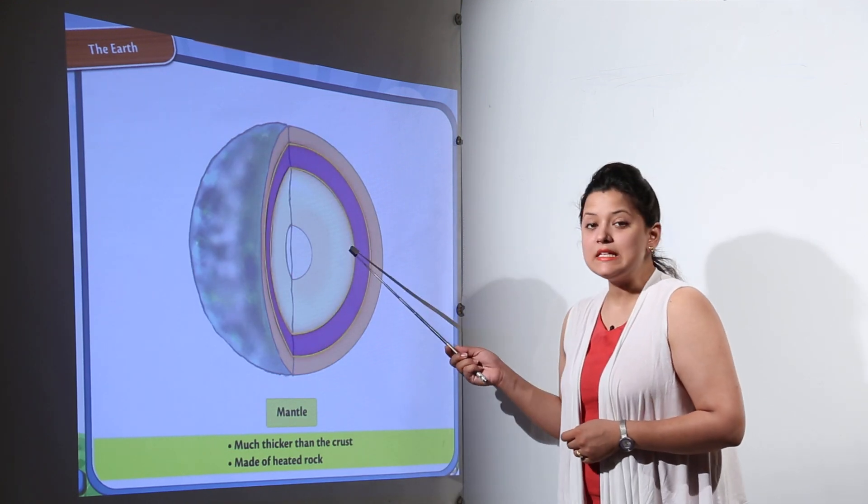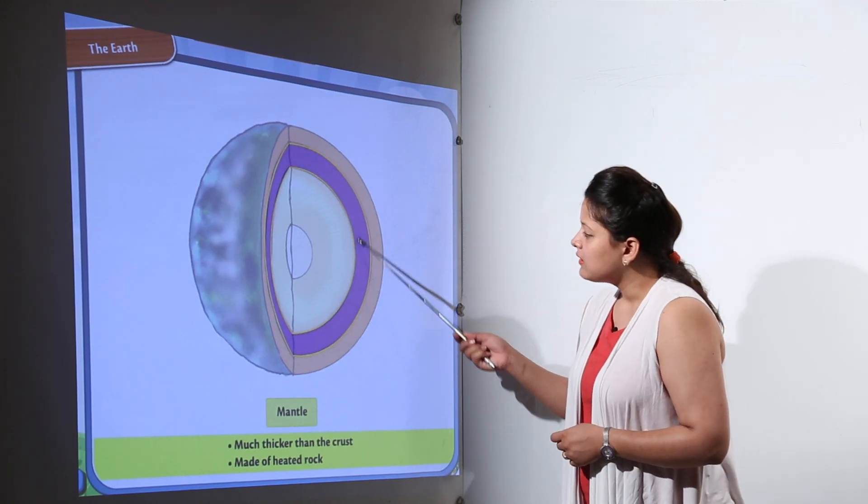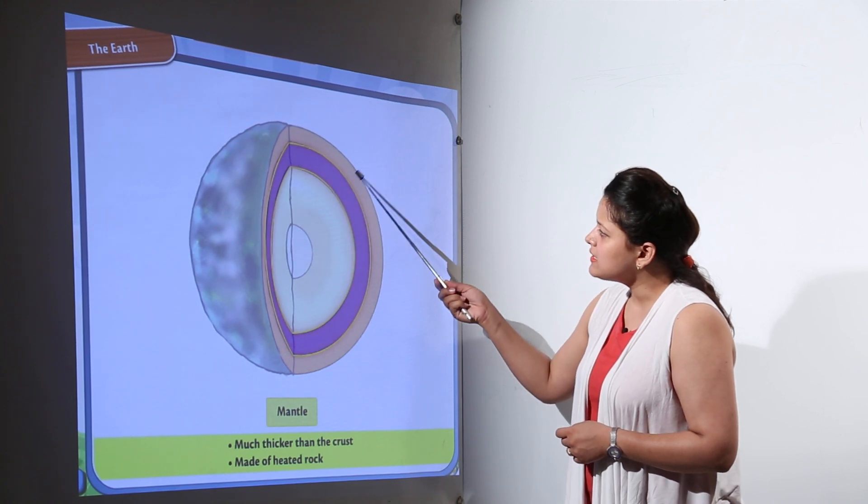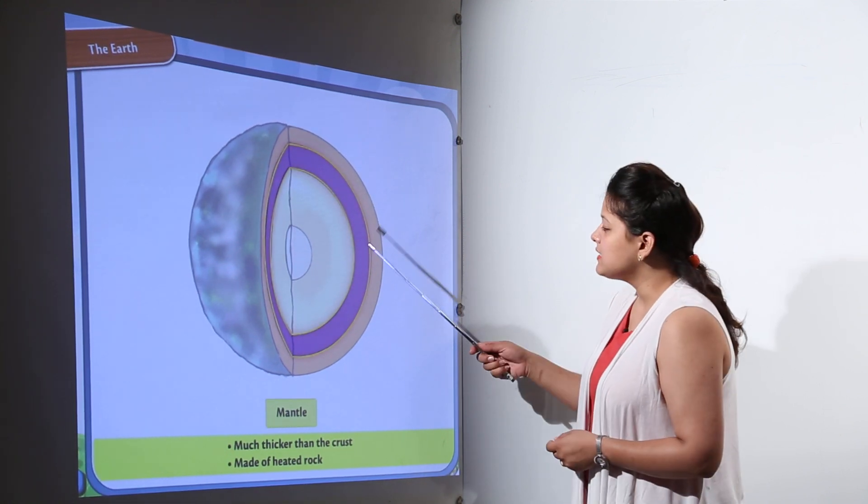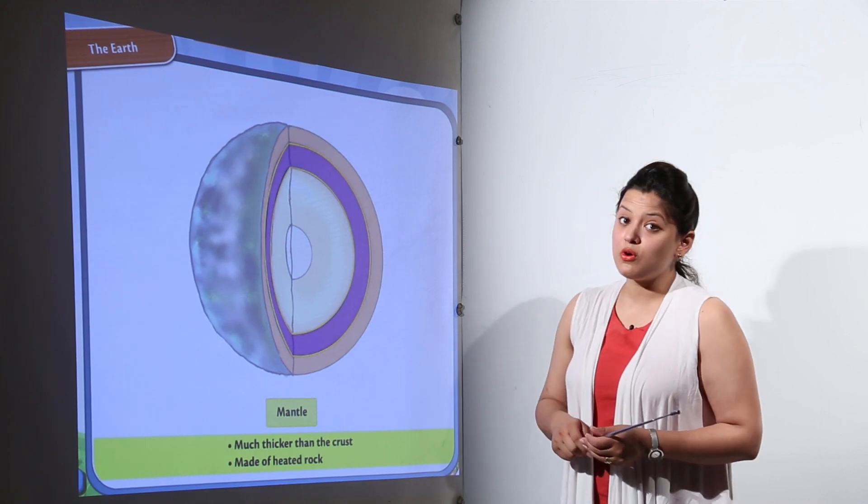The next layer is the mantle. Here you can see the thickness is a little more than the outer layer, and it is made up of heated rocks.